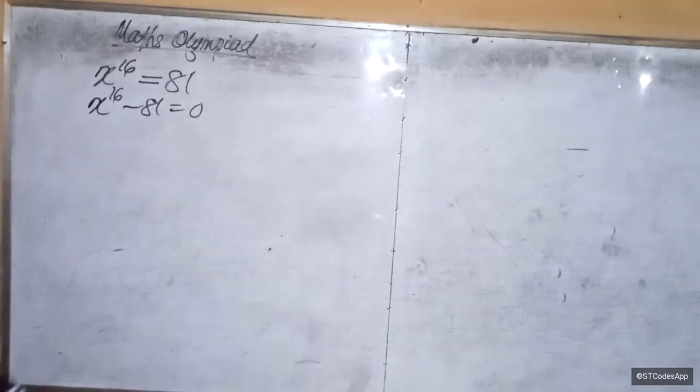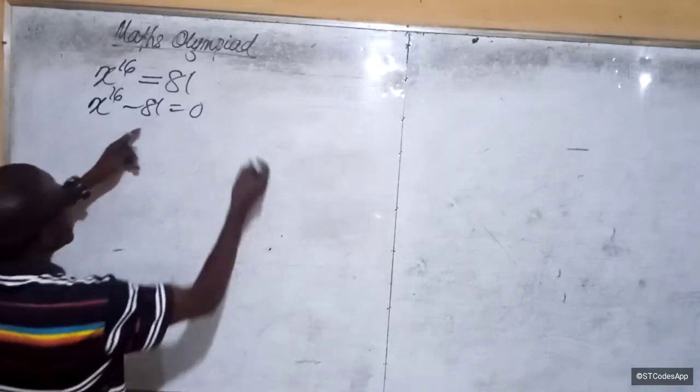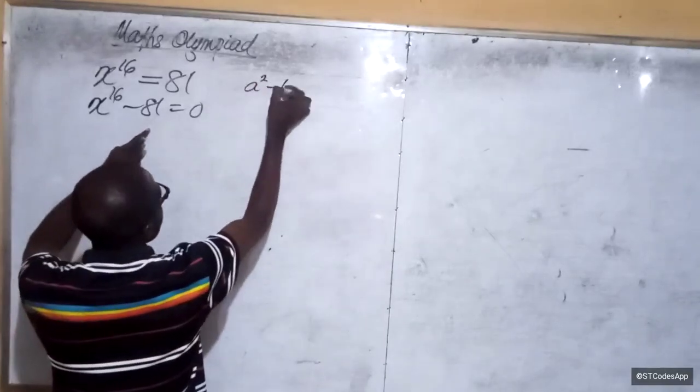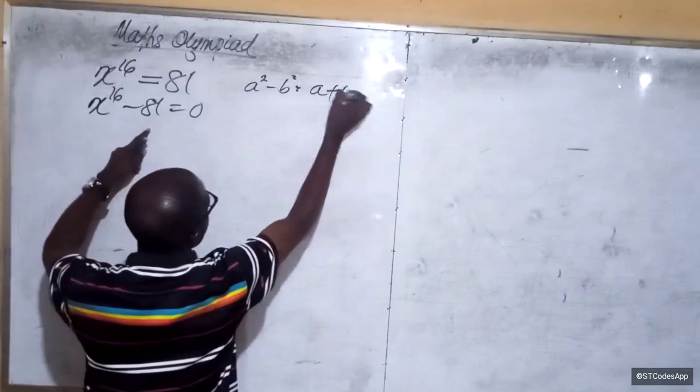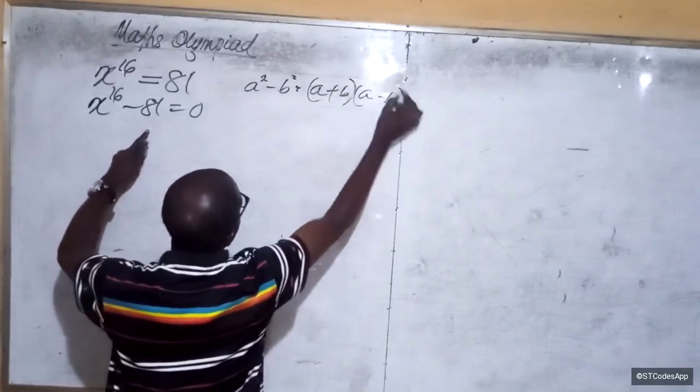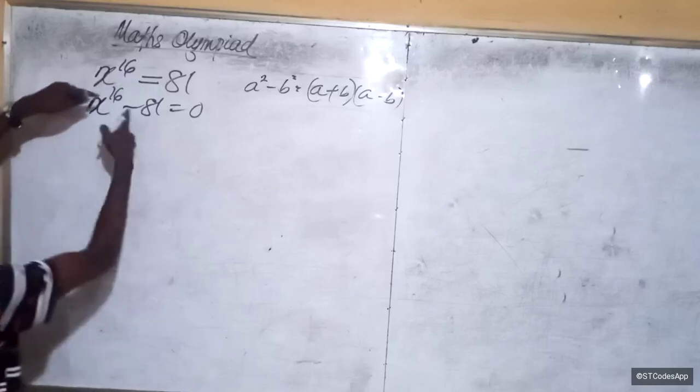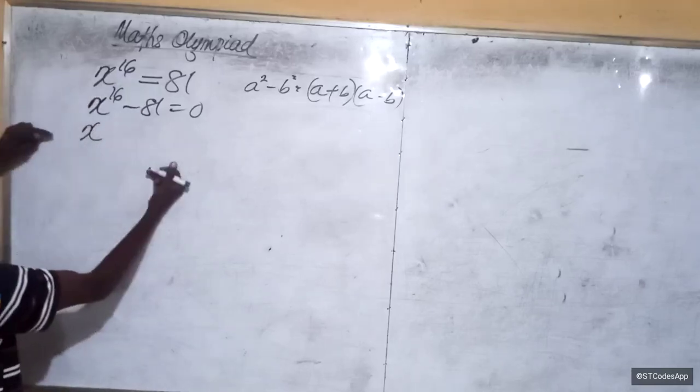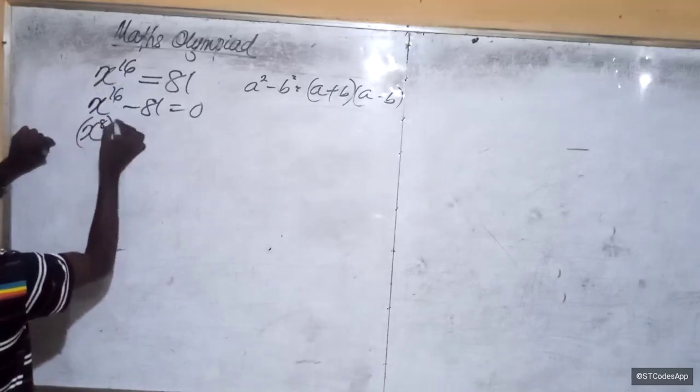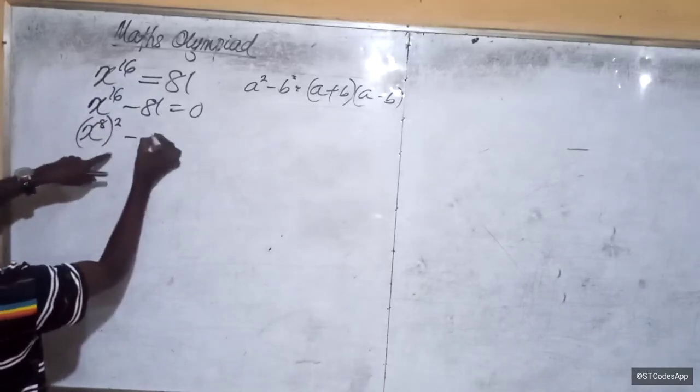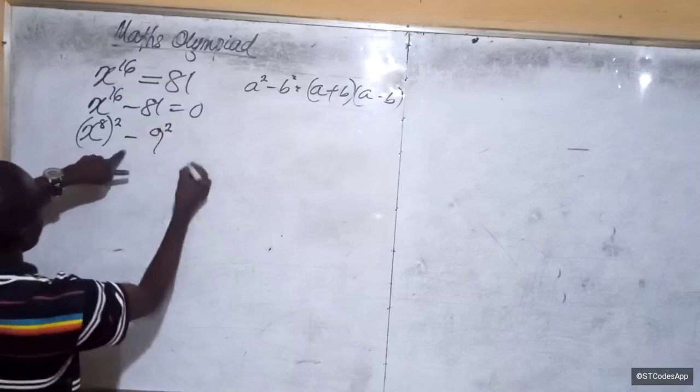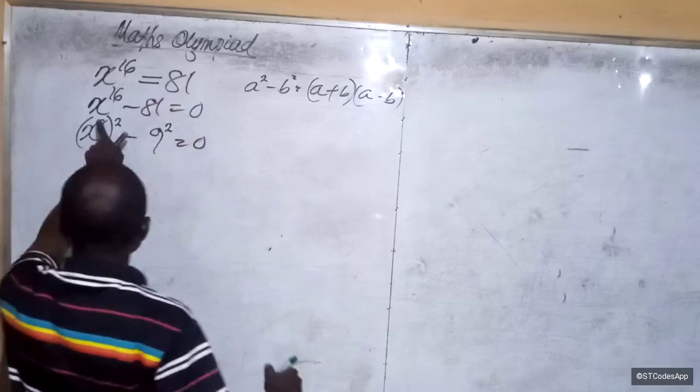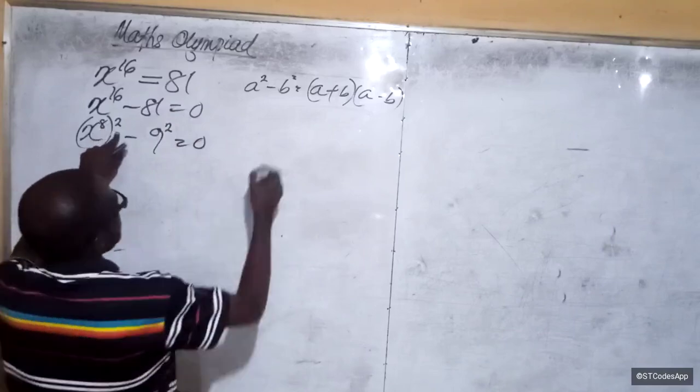From here it becomes simple. What about difference of two squares? a squared minus b squared is equal to a plus b and a minus b. So here we are going to turn into difference of two squares. It becomes x raised to the power 8 whole squared minus 9 raised to the power 2 whole squared is equal to zero.